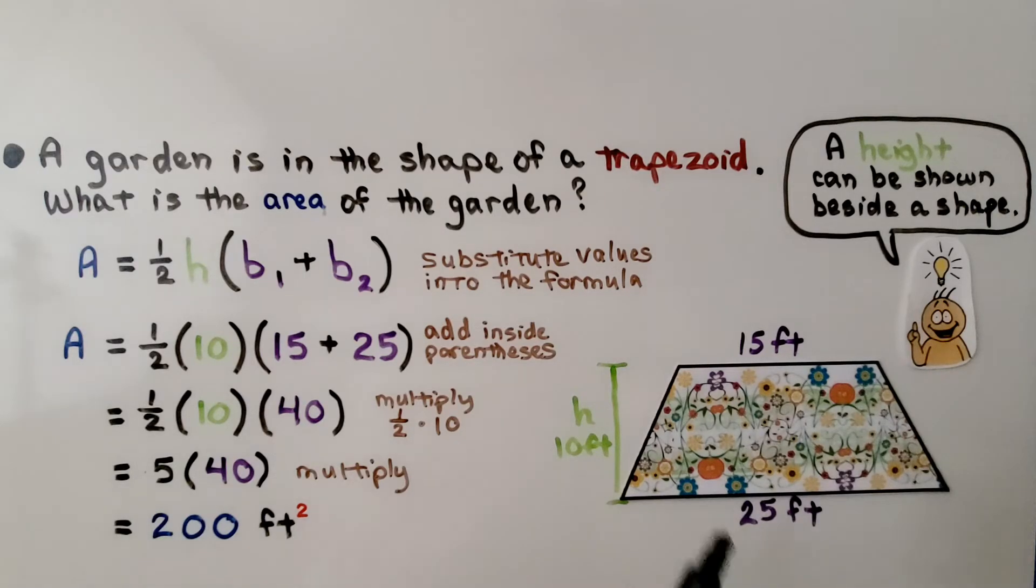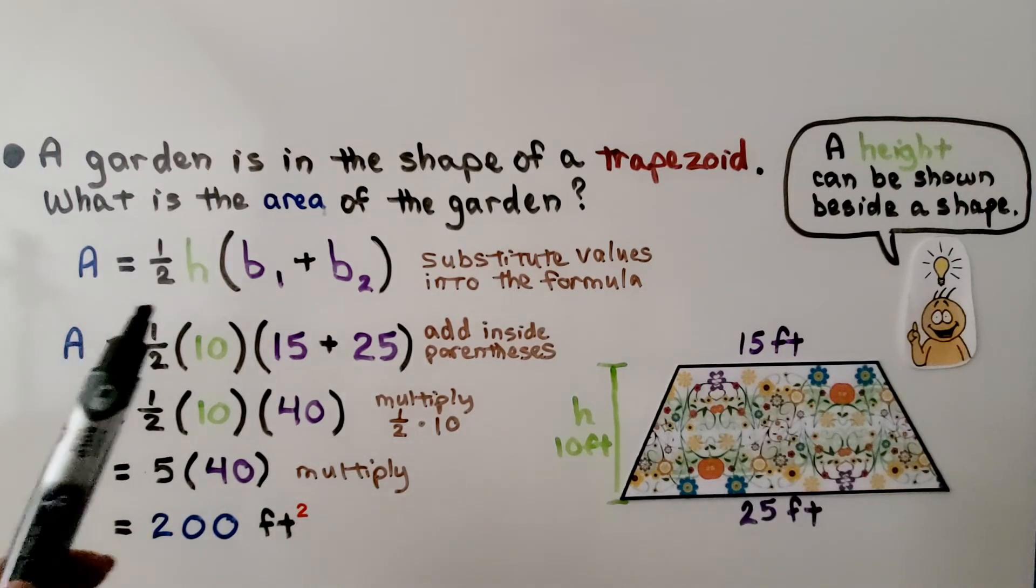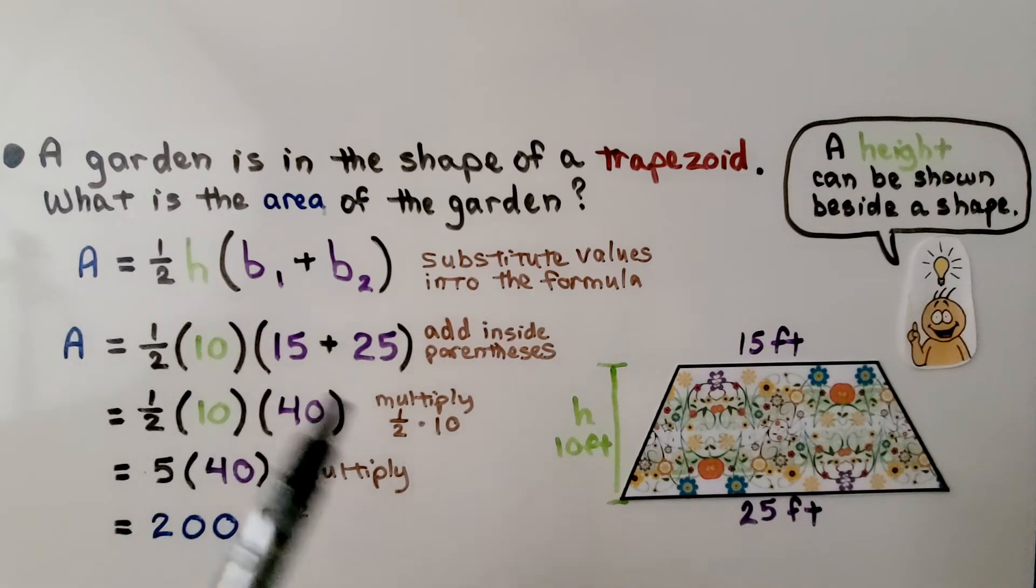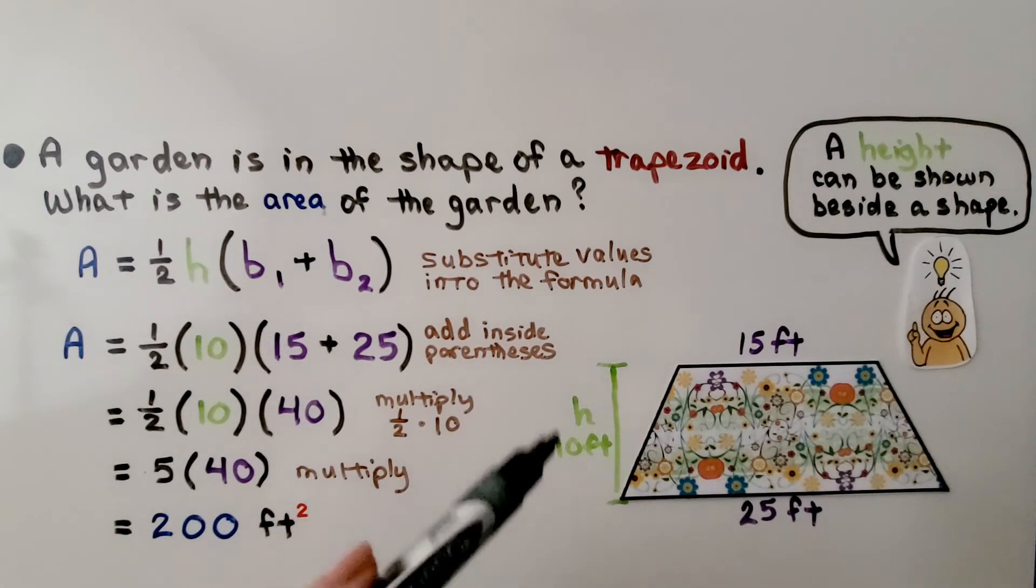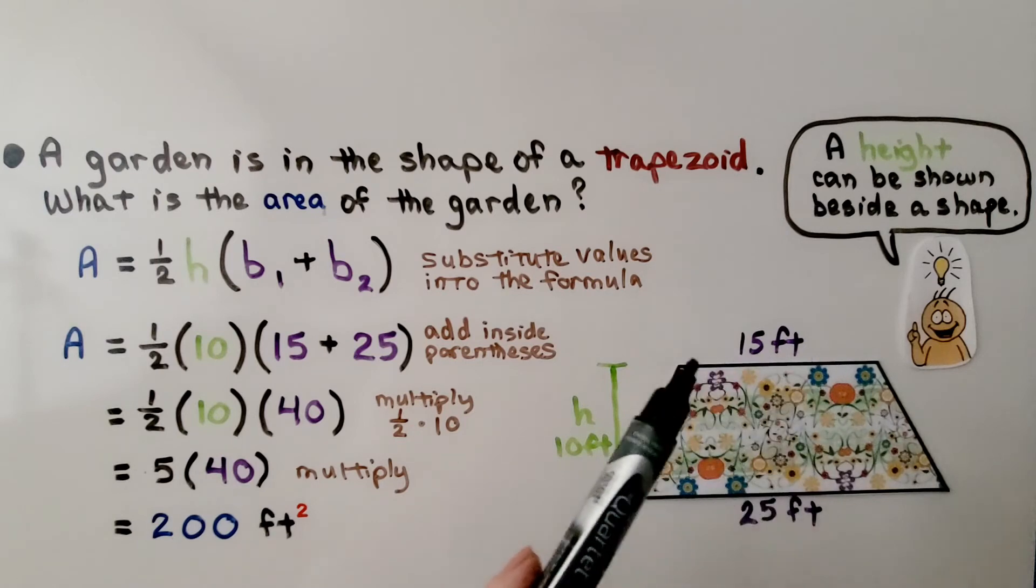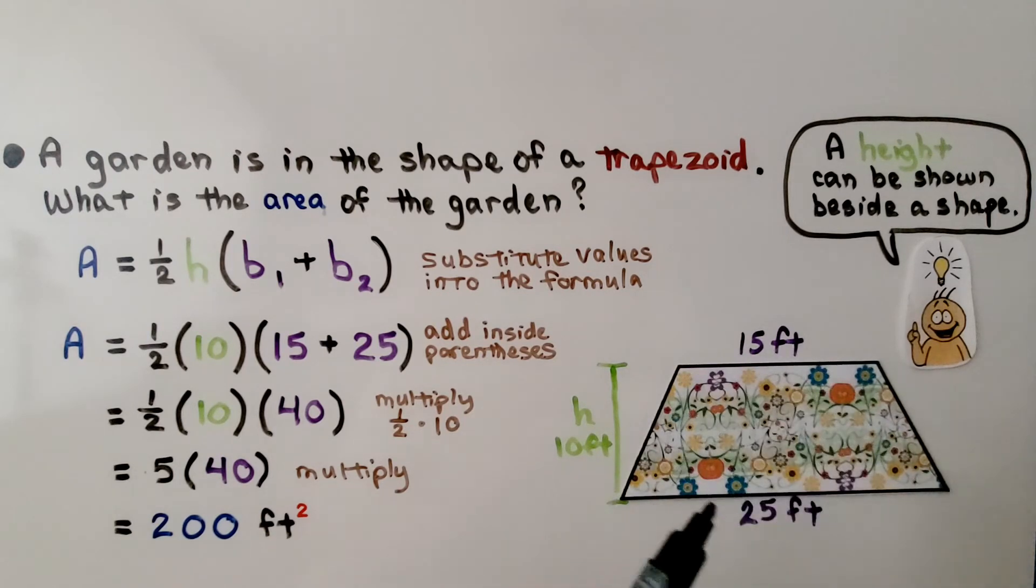Here we have a garden in the shape of a trapezoid. What is the area of the garden? We're going to use our formula for the area of a trapezoid. We see that the height is 10 feet. This base, base sub 1, is 15 feet. Base sub 2 is 25 feet.